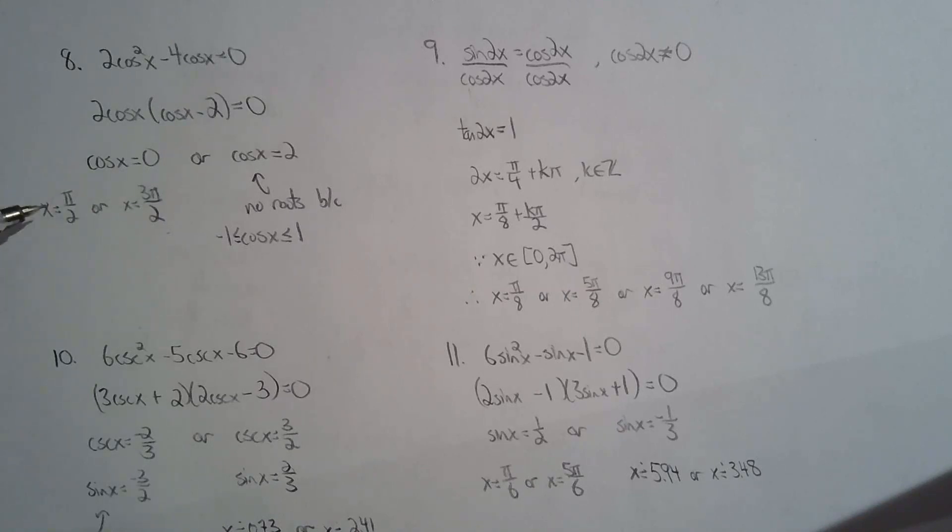If you know the cosine function graph, then pi over two and three pi over two should come to you quite quickly. Any odd multiple of pi over two will do, but there are not infinite solutions because it's restricted from zero to 2pi.